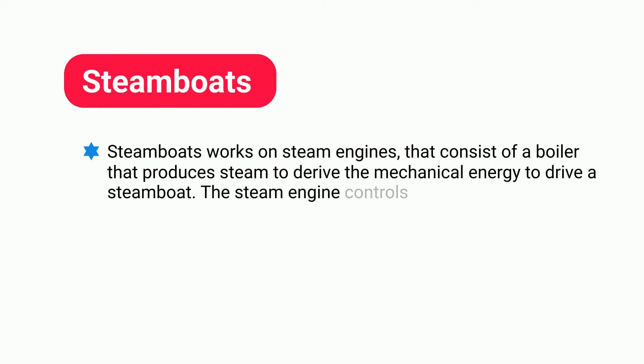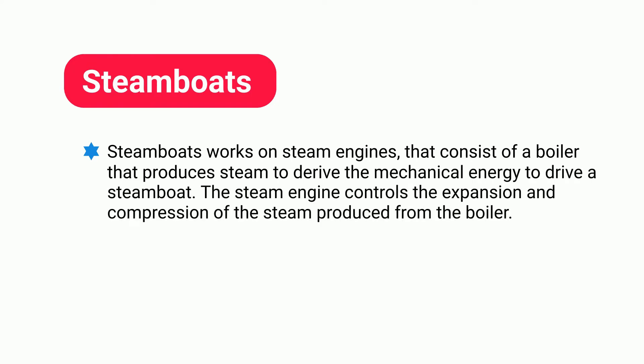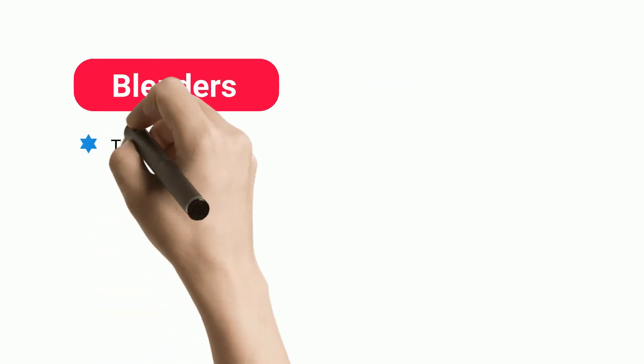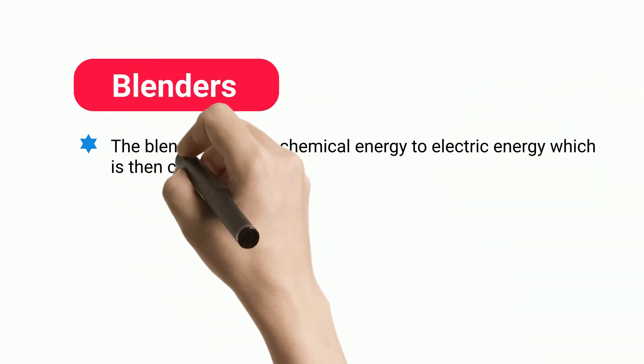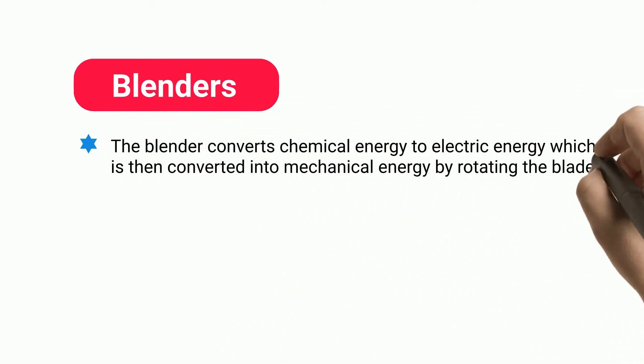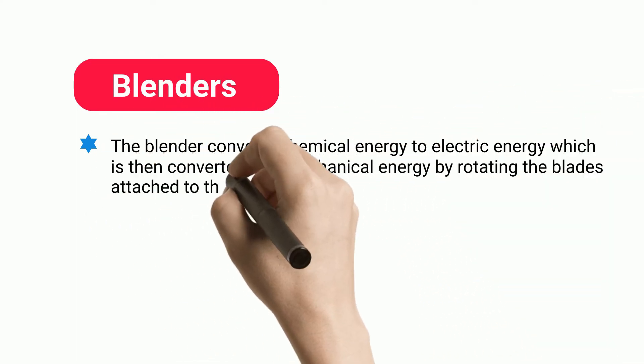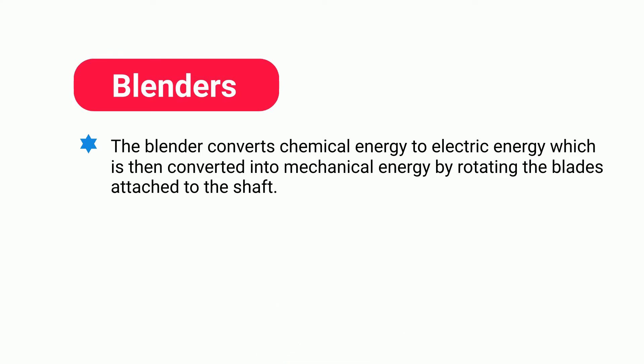Steamboats work on steam engines that consist of a boiler that produces steam to derive the mechanical energy needed to drive a steamboat. The steam engine controls the expansion and compression of the steam produced from the boiler. Blenders convert chemical energy to electric energy, which is then converted into mechanical energy by rotating the blades attached to the shaft.